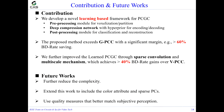In summary, we developed a novel learning-based framework for point cloud geometry compression, containing a pre-processing module for voxelization and partition, a deep compression network with hyperpriors for encoding and decoding, and a post-processing module for classification and reconstruction. The method exceeds GPCC by more than 60% BD-rate. We further improved learned PCGC through sparse convolution and multi-scale mechanisms, achieving more than 40% BD-rate gains against VPCC. In future work, we will reduce complexity, extend to color attributes and sparse point clouds, and adopt quality measures that better match subjective perception.